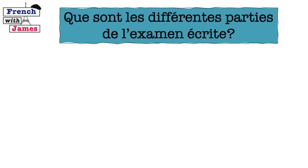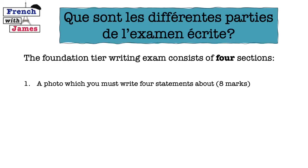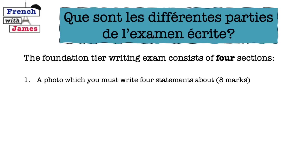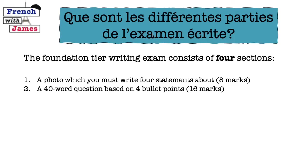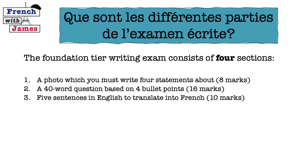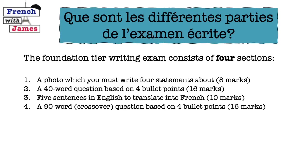Que sont les différentes parties de l'examen écrite? What are the different parts of the writing exam? The foundation tier writing exam consists of four sections. Section 1 is a photo which you've got to write four statements about, worth two marks each — a total of eight marks. Section 2 is a 40-word question based on four bullet points, worth 16 marks. Section 3 is a translation section where you translate five sentences from English into French, worth 10 marks. Section 4 is the 90-word crossover question, also worth 16 marks, giving a total of 50 marks.